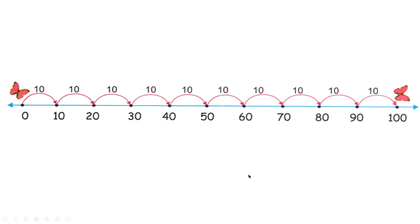So now we have in front of us a picture of a number line. As you can see, we start with zero and we end with 100, and we are skip counting by 10. So 0, 10, 20, 30, 40. Now, why does this help us in multiplying?